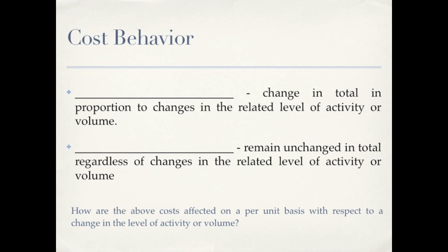Now let's look at cost behavior. The first behavior we'll look at is variable. Variable costs will change in total in proportion to changes in the related level of activity or volume. So the keyword here in this definition is total. Note variable costs change in total, unlike fixed costs which remain unchanged in total regardless of changes in the related level of activity or volume. So again the keyword in both of these definitions is total.